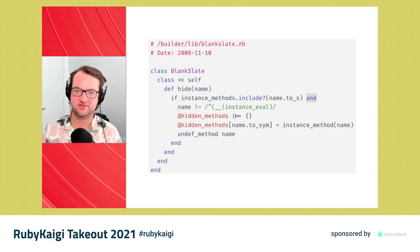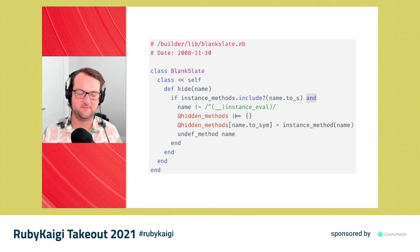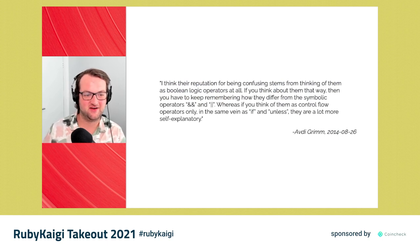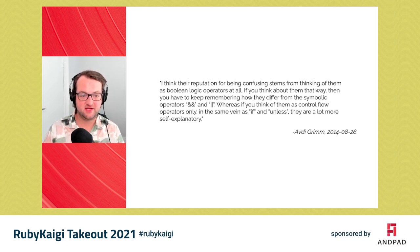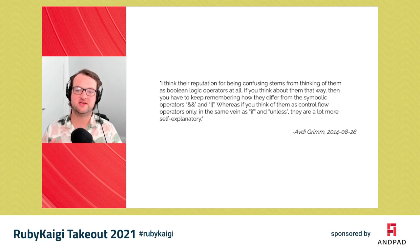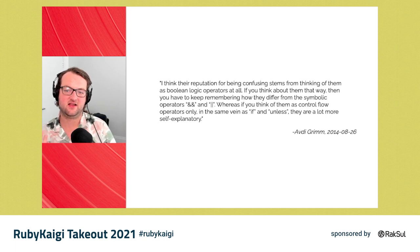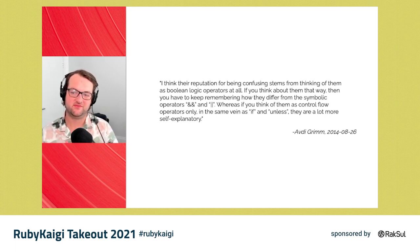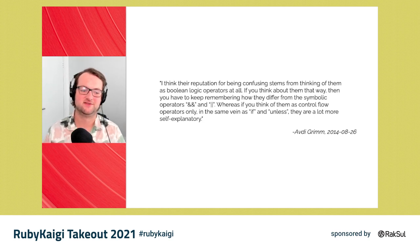You also see the use of the and keyword, which has become a bit of a no-no these days — but I think it shouldn't be. Quoting Avdi Grimm directly: 'Their reputation for being confusing stems from thinking of them as Boolean logic operators. If you think of them as control flow only — in the same vein as if and unless — they have a lot more self-evident meaning.' Instead of an inline next if foo equals one, you could do foo equals one and next. A little thing to spice up your Ruby code with great readability.